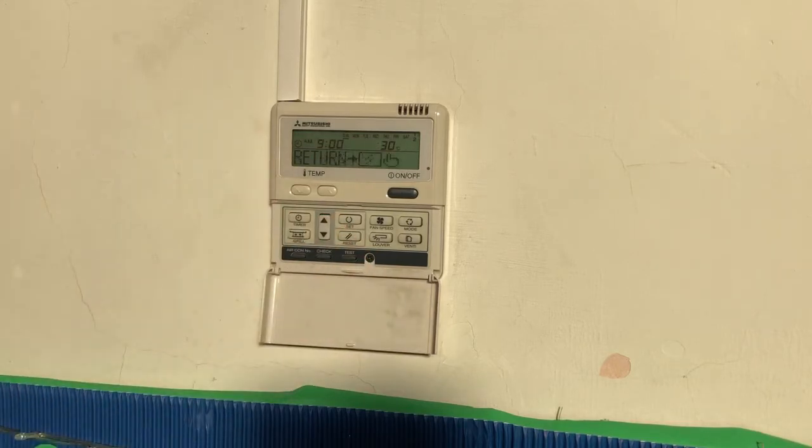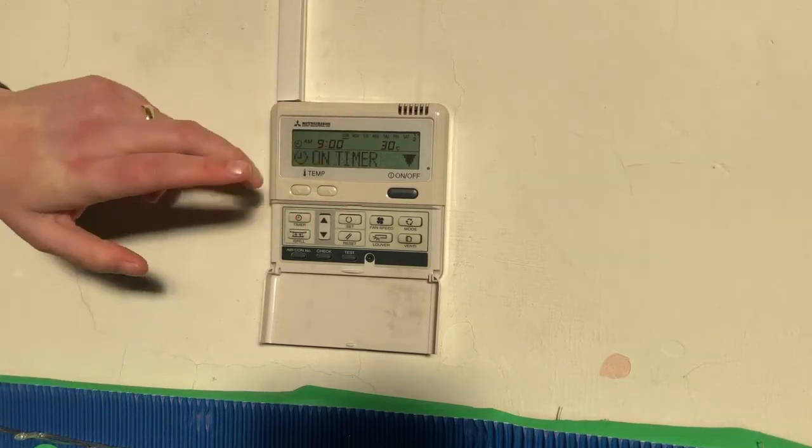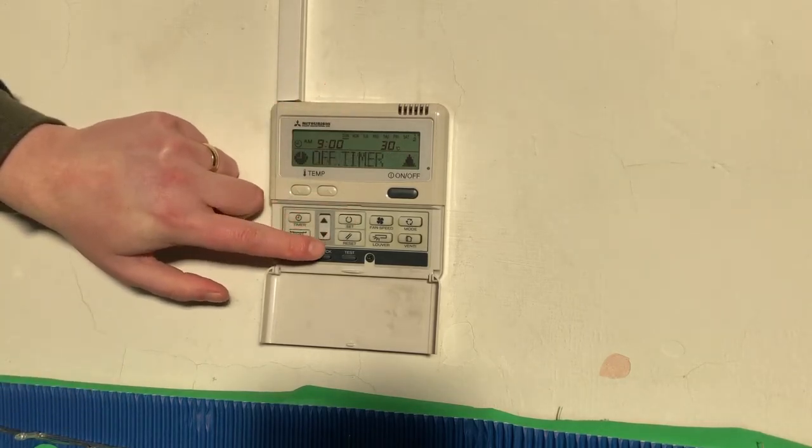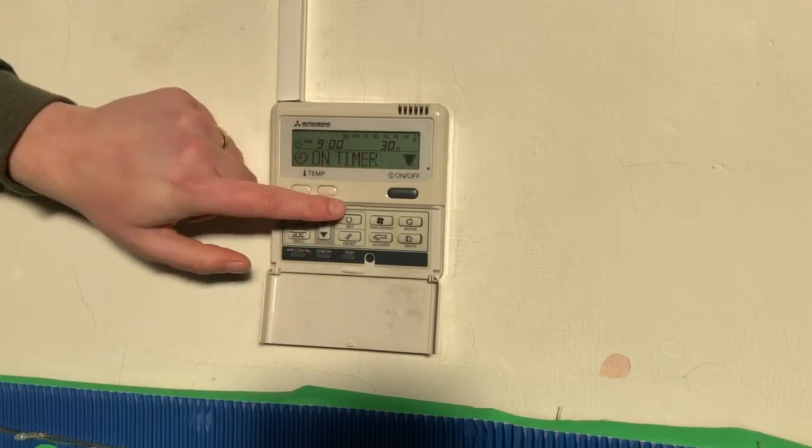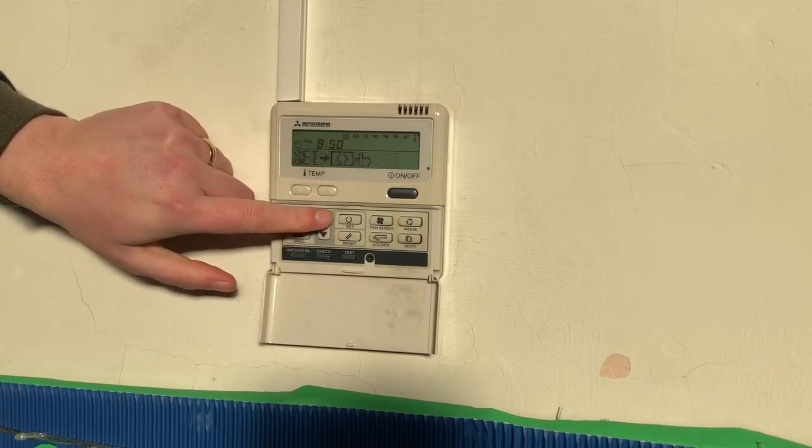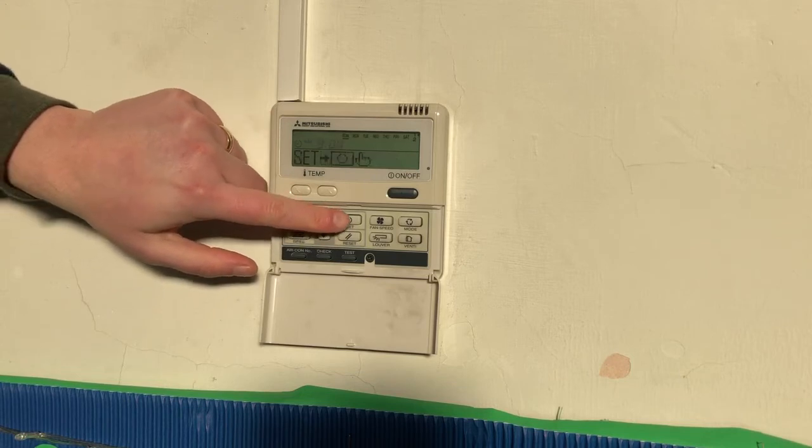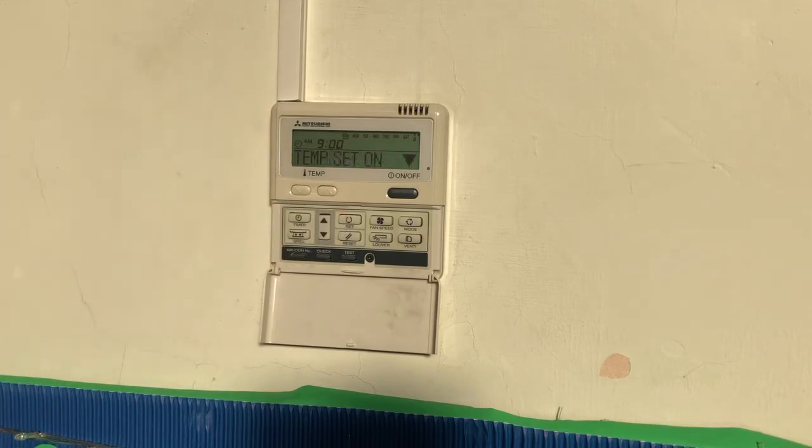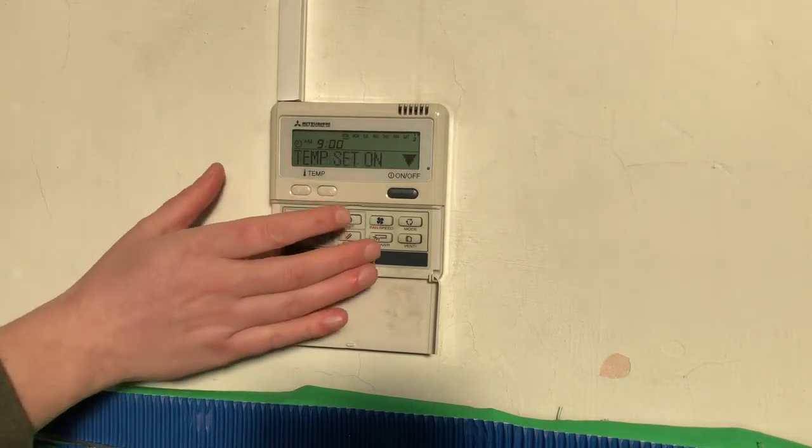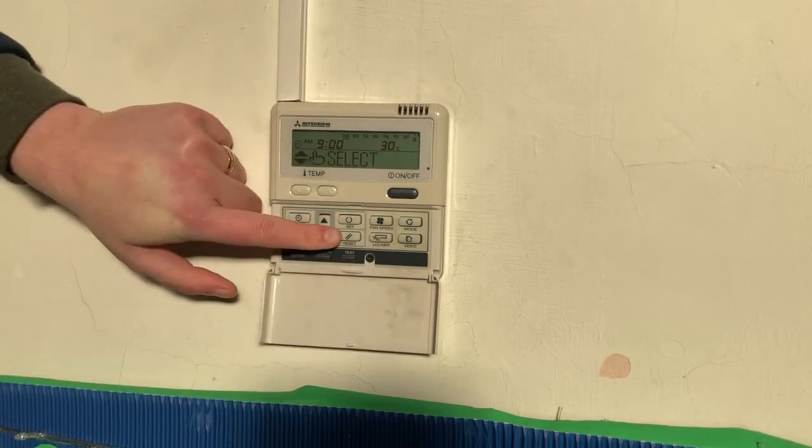Now to set this, we go in and we press set. Now it will give you the choice whether you want to do an on timer or an off timer. Now we want this to come on. So we will do an on timer. We then set the time so we can set it nine o'clock, nine ten, eight fifty, that sort of thing using the arrow keys. So I'll press nine o'clock. Then it will ask you to set the temperature. Okay. So we've set our timer then.